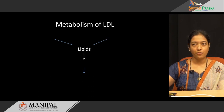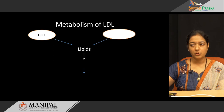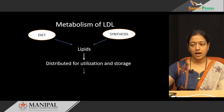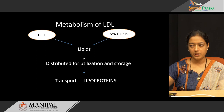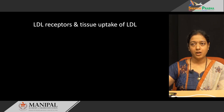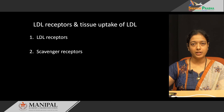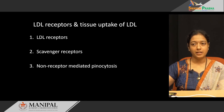Coming to metabolism of LDL, the two important sources for lipids are exogenous and endogenous. Exogenous sources are dietary lipids; endogenous sources are lipids synthesized inside the body. These lipids are distributed for utilization and storage, and their transport takes place with the help of lipoproteins. There are three mechanisms by which LDL metabolism takes place: LDL receptors, LDL metabolism via scavenger receptor, and non-receptor mediated pinocytosis.